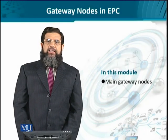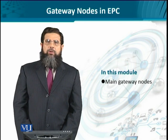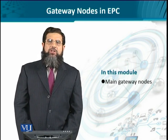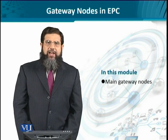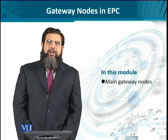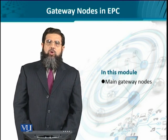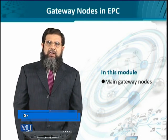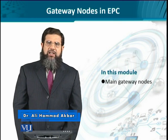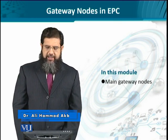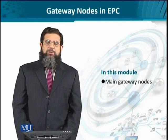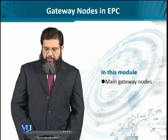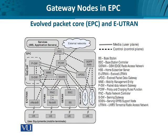We are going to look at the inside of the Evolved Packet Core in terms of the gateway nodes and the control nodes. The gateway nodes are essentially very different from the control nodes because the control nodes are used for controlling the inlet and the connection establishment for the caller party and called party. But gateways provide connectivity to the external network. We'll look at some of the most important gateways.